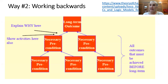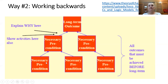Looking at way number two — working backwards — we have our long-term goal and identify the necessary preconditions or outcomes to make that goal possible. This level of preconditions may need another level of preconditions for them to be possible. You have this ongoing chain of events, and at the bottom you lay out the activities or actions you can take to help make the first-level outcomes happen, then the second-level outcomes, and finally lead to the long-term outcome, goal, or impact.